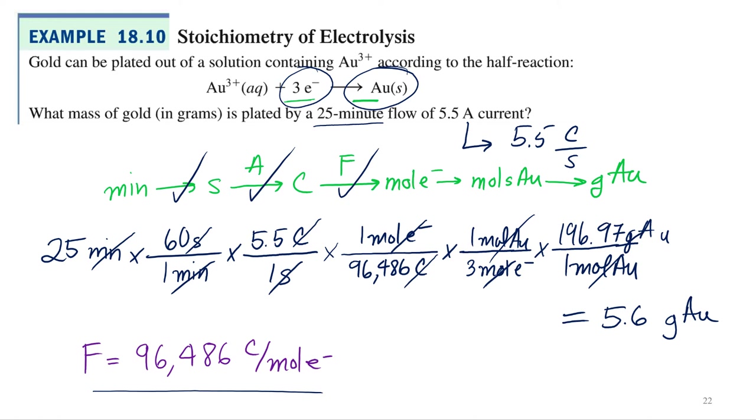Alright. And then of course you can do a couple other variations of this. Say I know I want 10 grams of silver plated onto a spoon, and I'm going to use 10 amps. How long will it take? So you're going to basically go from grams to time using the same conversion factors. Or you might say I want to plate 5.6 grams of gold and 25 minutes is too long. I've got things to do with my gold plating business. I might want to do it in 15 minutes. What do I need to increase my current to?